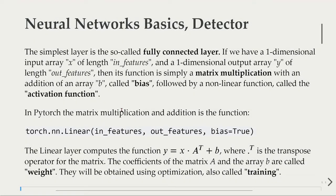The simplest layer is the so-called fully connected layer. If we have a one-dimensional input array X with length in_features, and a one-dimensional output array Y of length out_features, then the function of this fully connected layer is simply a matrix multiplication with an addition of an array B, called bias, followed by a nonlinear function called the activation function.